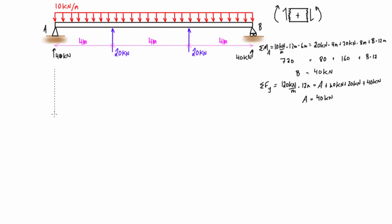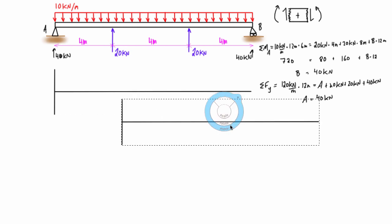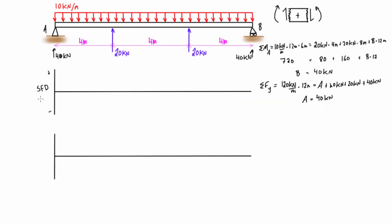Now we want to set up the shear force and bending moment diagrams, starting from the left hand side working our way across. Let's start with a free body diagram with a virtual cut just to the right of point A. We have that reaction of 40 kilonewtons pressing up and some internal shear force pressing down. Just to the right of A, the distributed load is infinitesimally small so it won't appear, and the shear force will be positive 40.